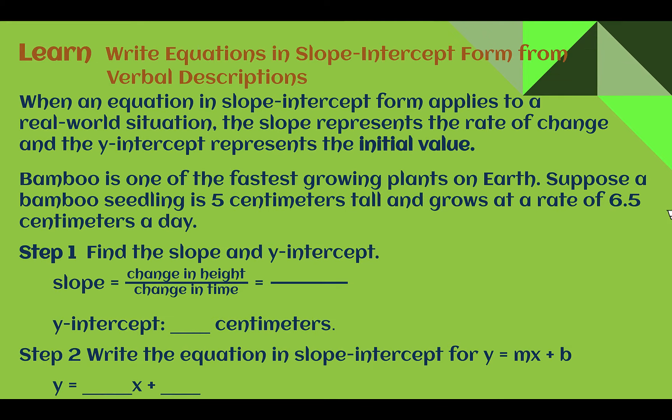Let's learn: write equations in slope-intercept form from verbal descriptions. When slope-intercept form applies to a real-world situation, the slope represents the rate of change — as we've seen in previous lessons — but the y-intercept represents the initial value. Sometimes the initial value might be zero, but in these contexts it's usually something else, or it might be like an extra fee that you only pay one time.